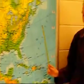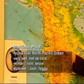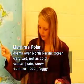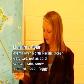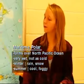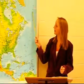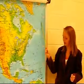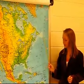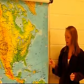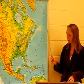Then we have a Maritime Polar, and that occurs in the northern Pacific Ocean. It brings warm areas, very wet, and it brings rain and snow in the winter, and in the summer it's very cool and foggy. Then we have another Maritime Polar over here in the Atlantic Ocean, that is very cold and cloudy with precipitation, and in the summer it's cool and foggy.